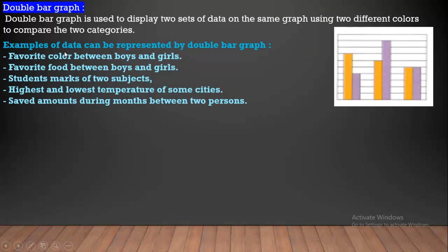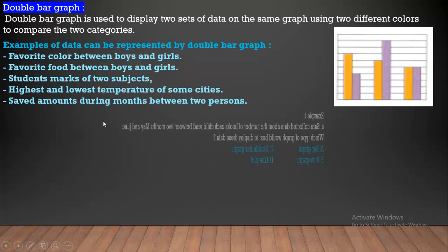We have an example of data can be represented by a double bar graph. Favorite color between boys and girls, favorite food between boys and girls. In a double bar graph, we have two kinds of people, boys and girls. Select markers of two subjects. We have two things to get a double bar graph. Highest and lowest temperature of some cities. Saved amounts during months between two persons.